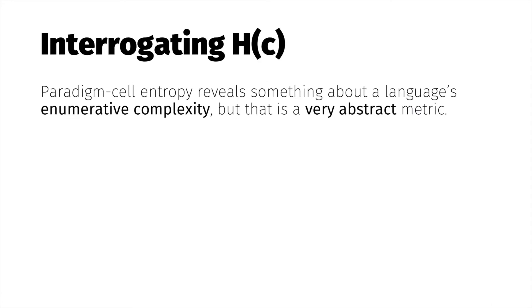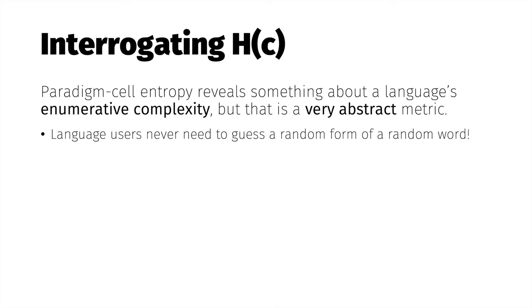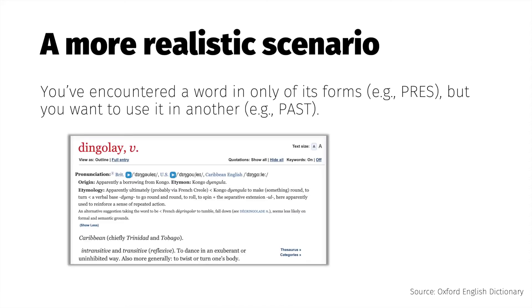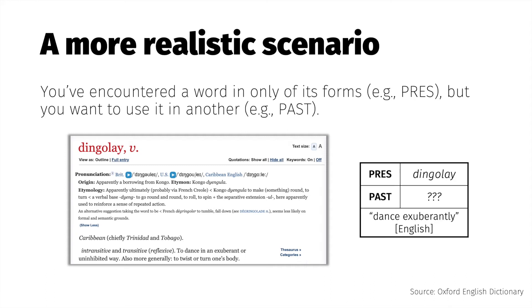Paradigm cell entropy sheds light on the enumerative complexity of Greek noun inflection. However, it doesn't really reflect anything meaningful about speaking Greek, because language users never need to guess a random form of a random word. What speakers do regularly is use a word in an inflected form they've never heard before. This happens even in English — here's a word recently added to the Oxford English Dictionary. Even if you've never heard anyone use the verb 'dingalay,' I'm very confident that the past tense form is 'dingalayed,' because knowledge of the present tense form of an English verb is usually enough to accurately predict its past tense form.